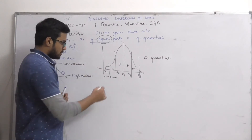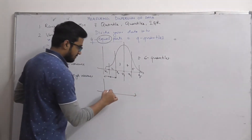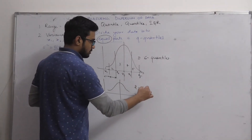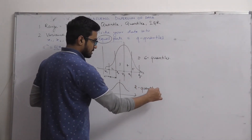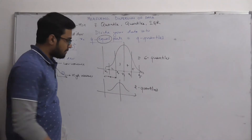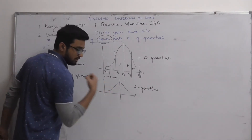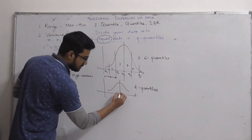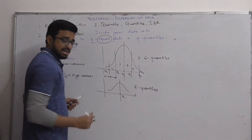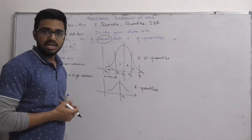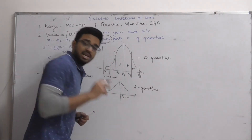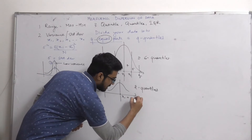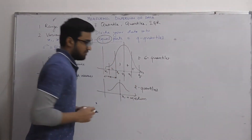Now suppose we divide the data into two quantiles. That means the number of observations on this side is equal to the number on this side. So that value x is representing the middle value of the data — hence it is also called the median. So x would be equal to the median of the data.